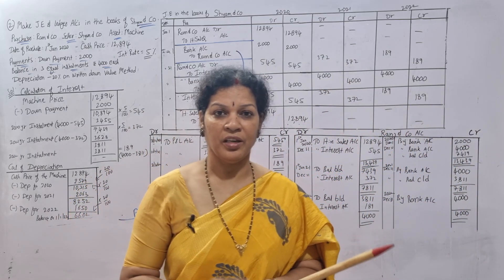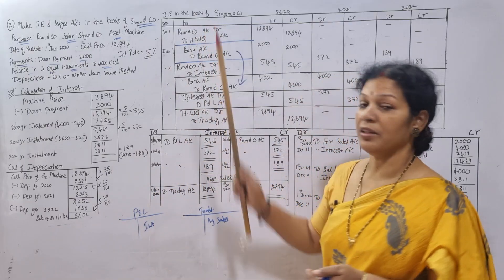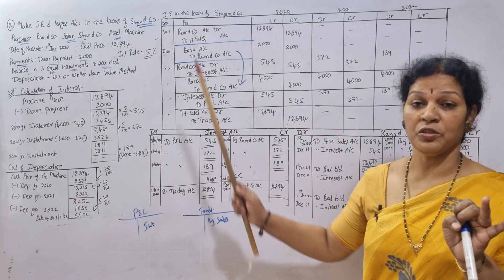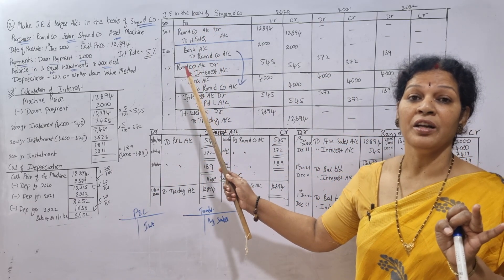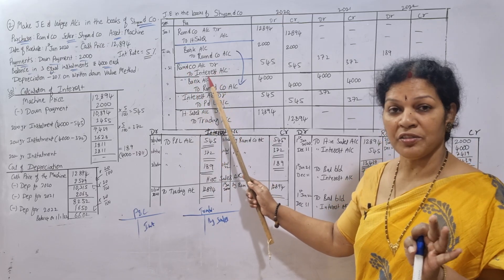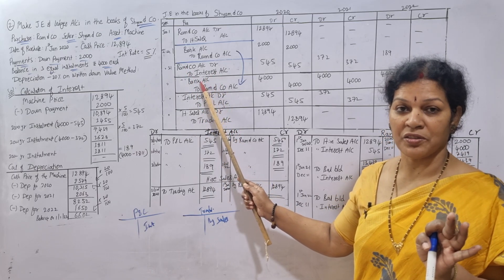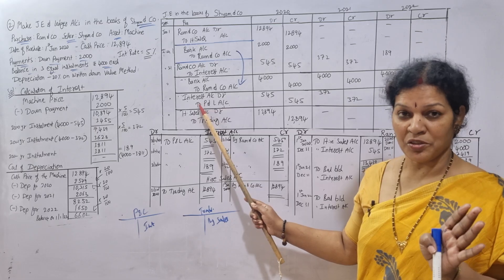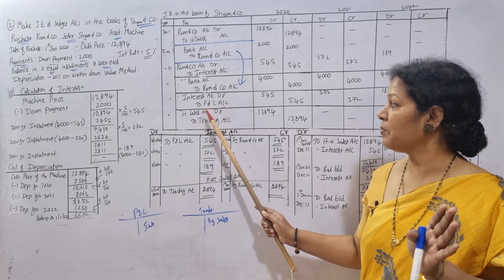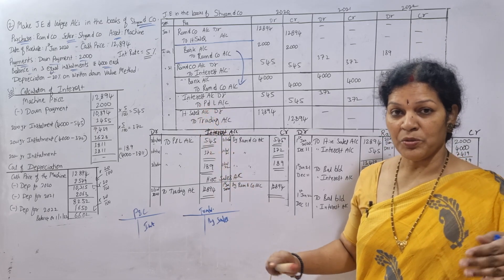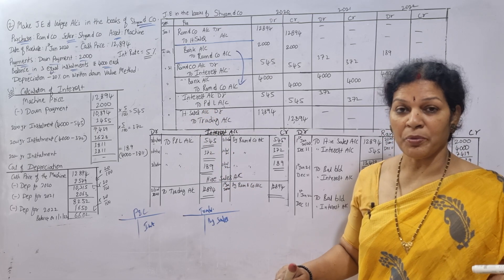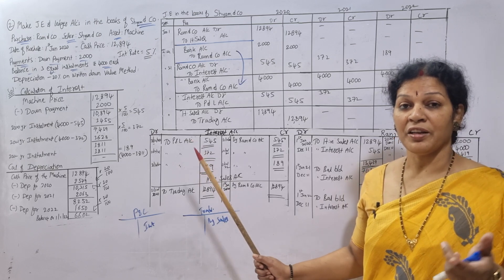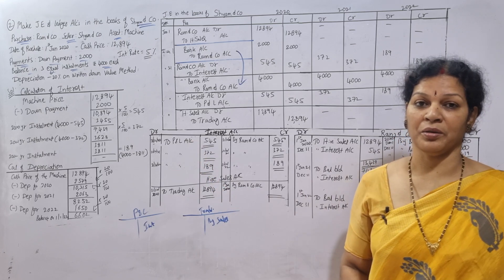Six entries in summary: First entry — for selling the asset. Second entry — for receiving the down payment. Third entry — for interest. Fourth entry — for receiving the first installment. Fifth entry — transferring interest to the Profit and Loss account. Sixth entry — transferring sales to the Trading account.